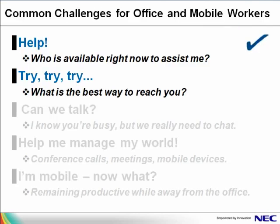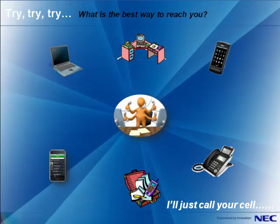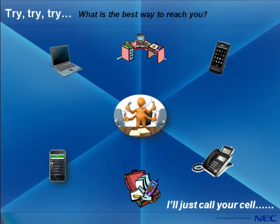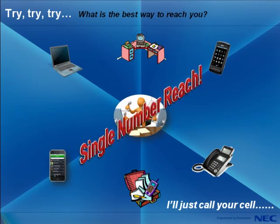Now that we have taken a quick tour and identified how we can locate people, let's look at another challenge people face on a day-to-day basis: what is the best way to reach you? On any given day, on how many devices can people reach you? Your desk phone, your cell phone, maybe you're working out of home and want calls there, or maybe you're in a remote office. Univerge 3C UC client has the answer.